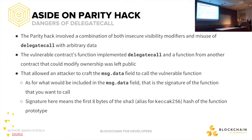With delegate calls, this brings me to the infamous Parity hack. The Parity hack involved visibility modifiers and misuse of delegate call with arbitrary data. The vulnerable contract implemented delegate call and a function from another contract that could modify ownership — and that was made public. This allowed the attacker to craft the message.data field to call that vulnerable function. The function signature is the first 8 bytes of SHA-3 of the hash of the function prototype. You would run web3.sha3 on the function itself, slice it, and put it inside message.data.